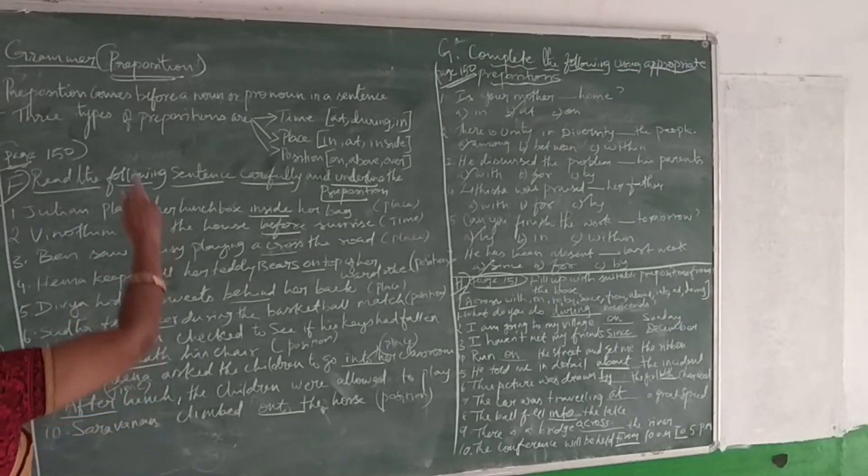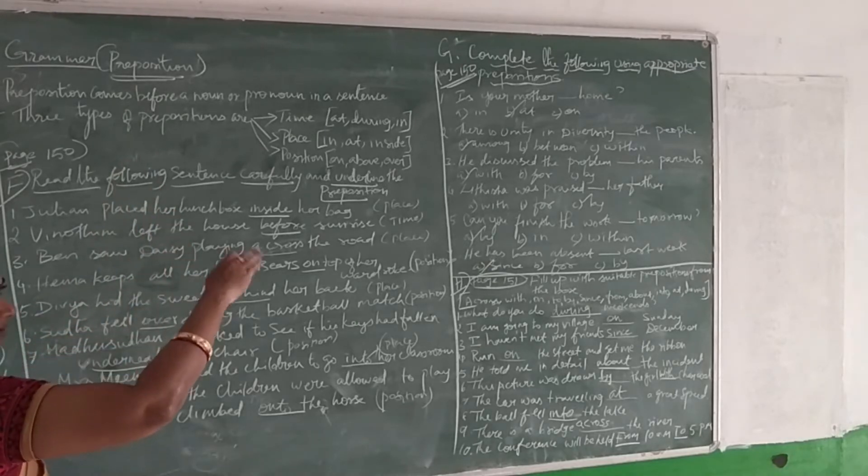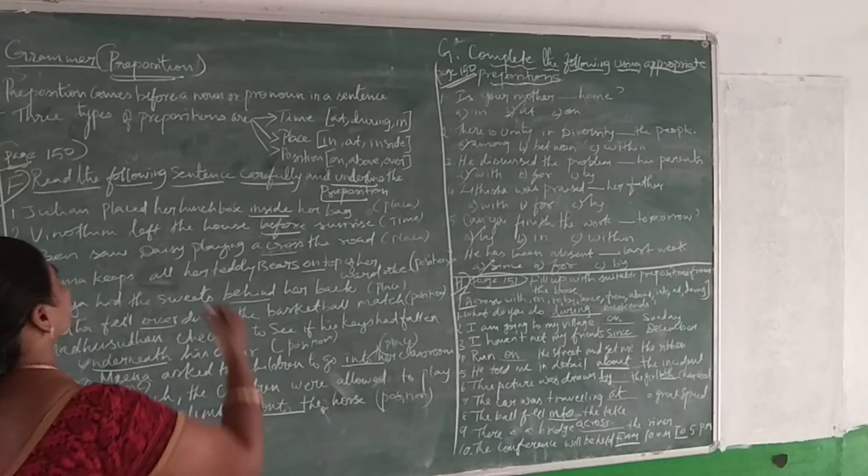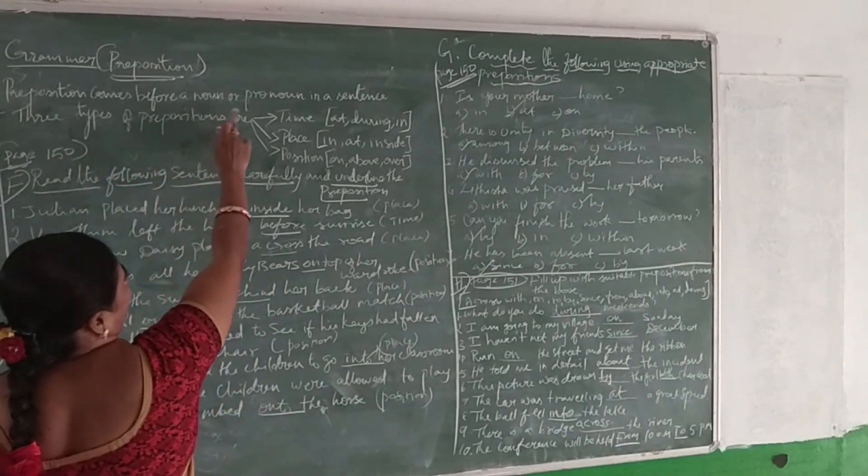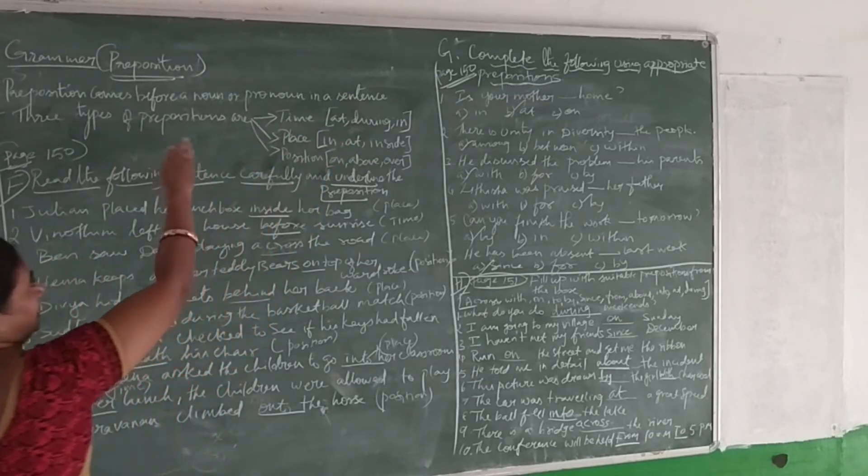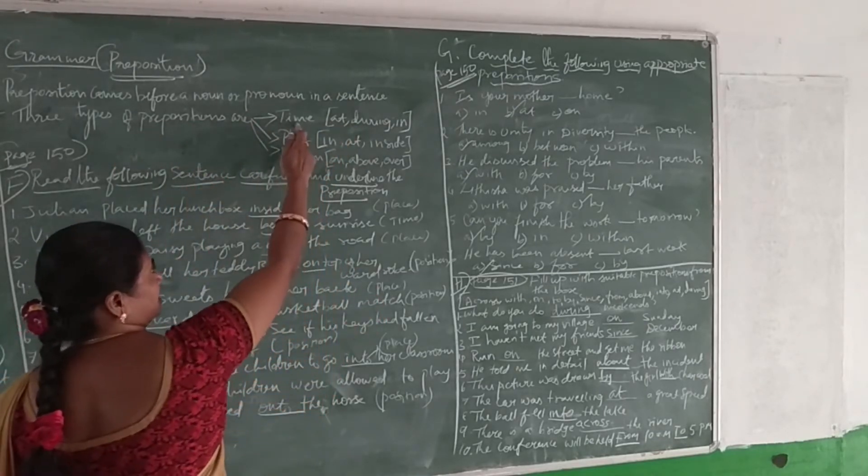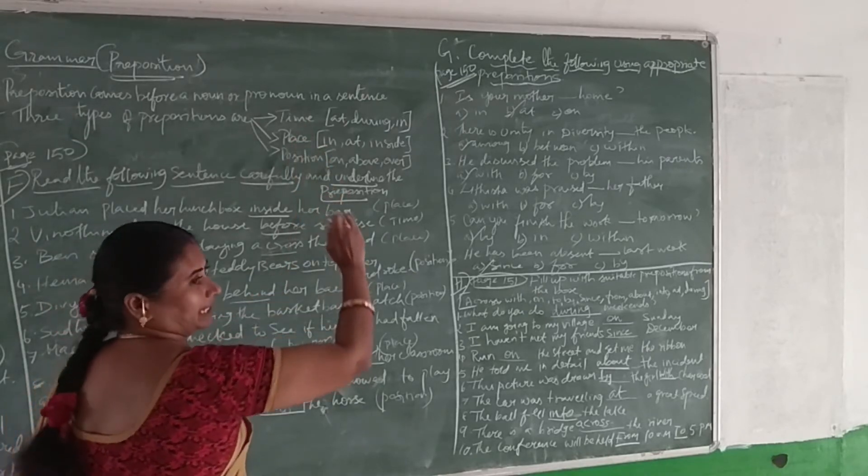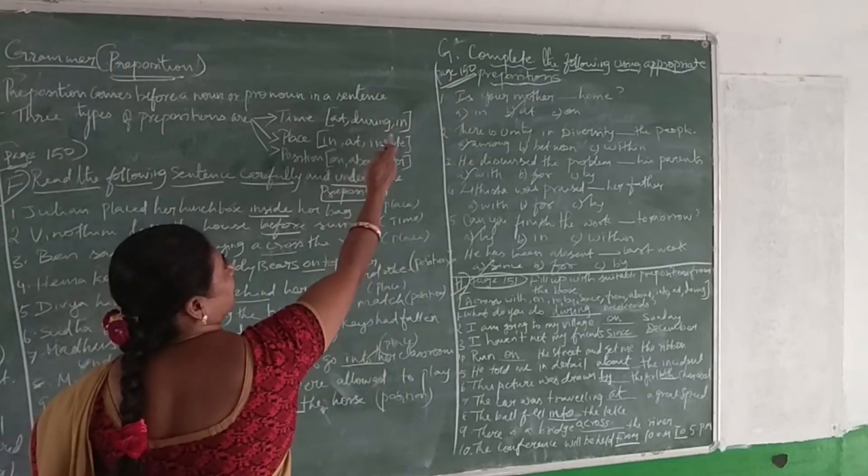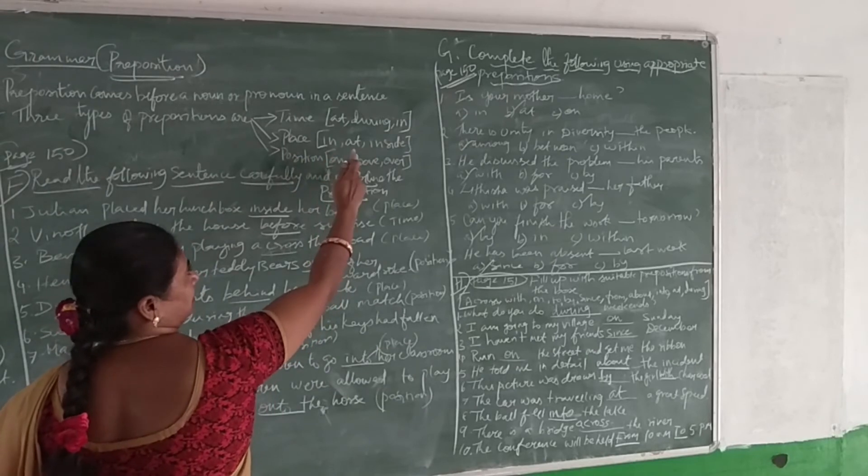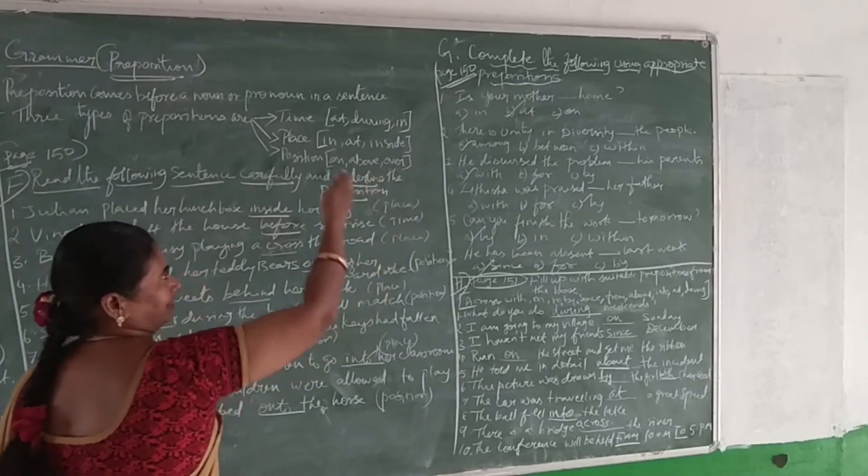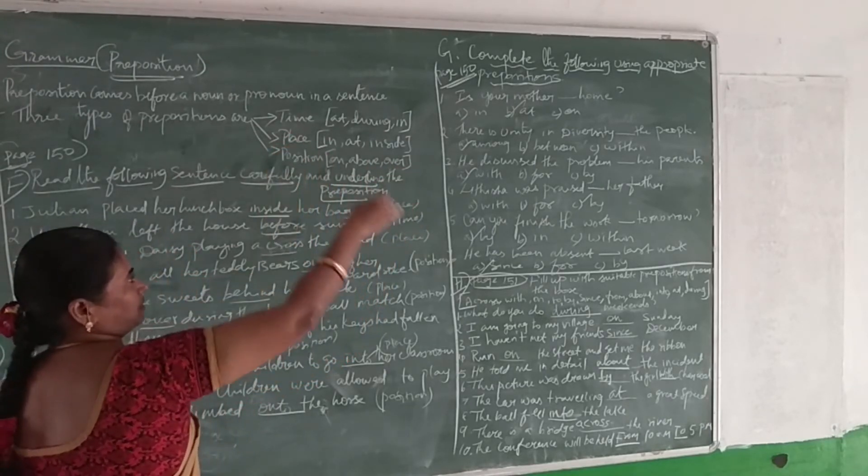Next is the grammar exercise on prepositions. Before going to the exercise, I am going to explain about prepositions. A preposition comes before a noun or pronoun in a sentence. It transfers into three types: one is time, another is place, and another is position. Time includes 'at', 'during', 'in'. Place includes 'in', 'at', 'inside'. Position comes before a noun: 'above', 'lower'. These are the three types of prepositions.